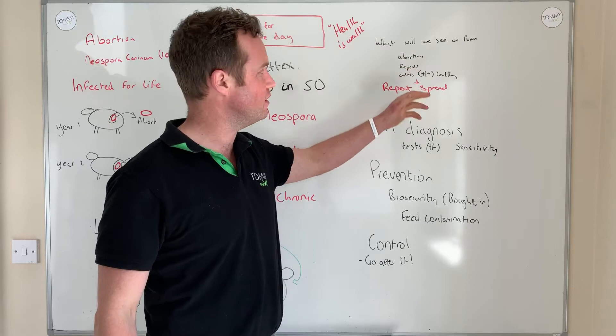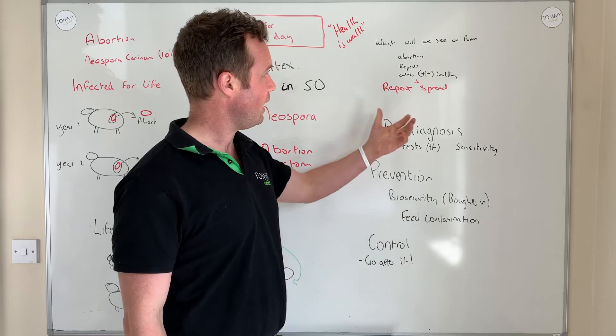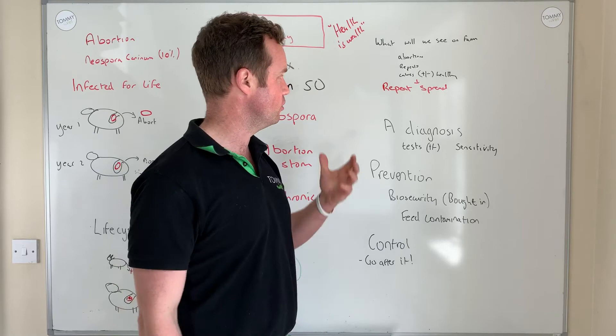Typically with Neospora on farm, you see abortions and lost fetuses between five to seven months. Sometimes you'll see cows repeating at two to three months after service where no fetus is seen — that could be linked to it, though there are other causes too. Calves can be born healthy, and very rarely calves can be born with neurological signs related to the Neospora infection, such as incoordination and lack of balance.